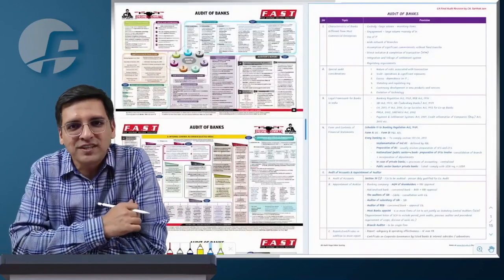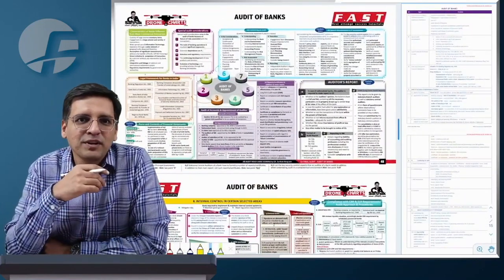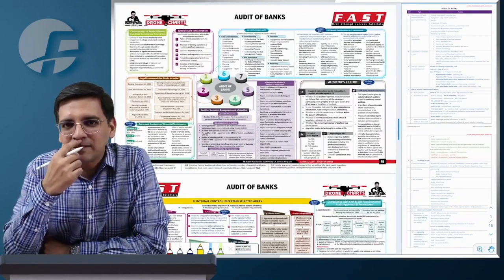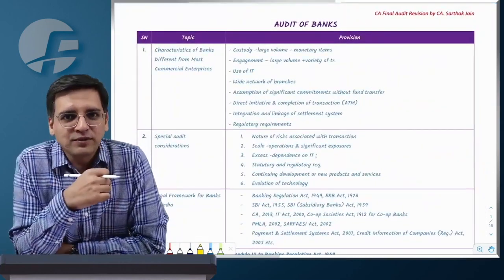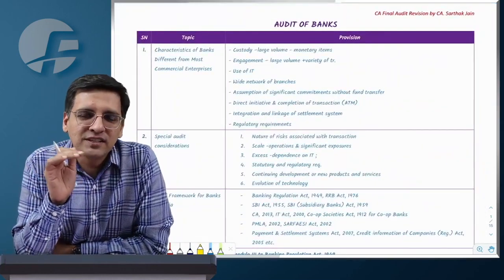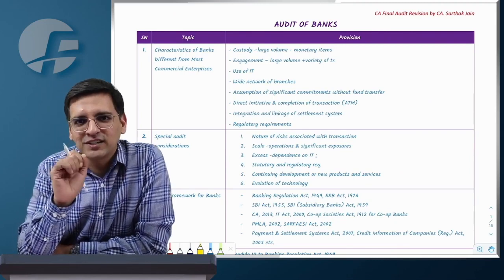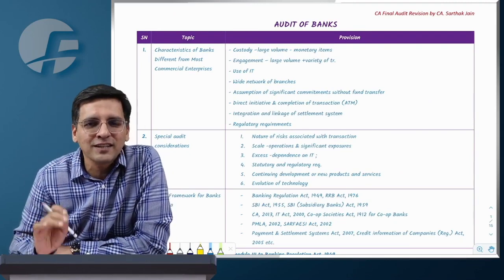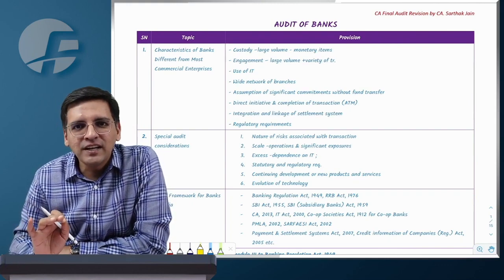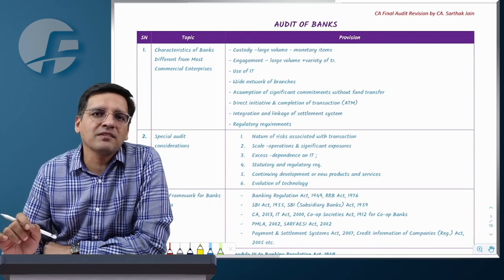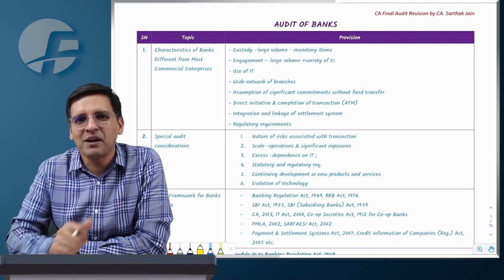We will cover the ICAI study material, but the best way to revise is through drone charts. In case you don't have the drone charts due to 2022 amendments, I have created a simpler and shorter version based on keywords. This PDF is available on our Telegram channel or FAS.edu.in website. This is a very useful video for last-day revision — even if you were thinking of skipping this chapter, just go through this video and you'll be able to handle it in the exam.